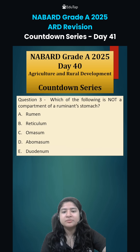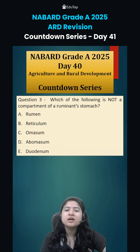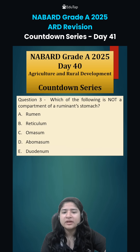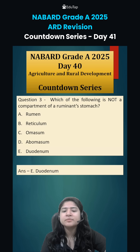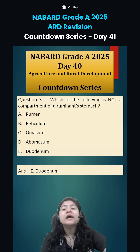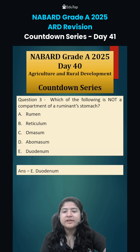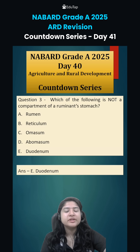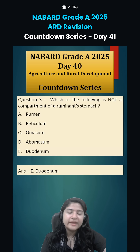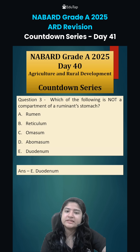Coming to Question 3: which of the following is not a compartment of the ruminant stomach? I hope this is now easier. The answer is the duodenum — it is not part of the ruminant stomach. Please keep in mind, we are talking about the ruminant stomach specifically. The duodenum exists in the digestive system of humans and other animals, but it is not one of the four ruminant stomach compartments.